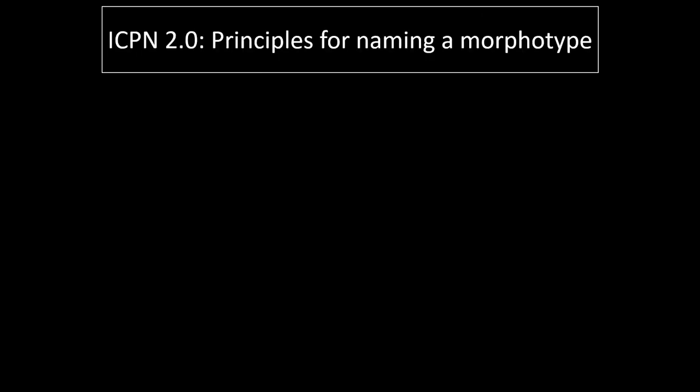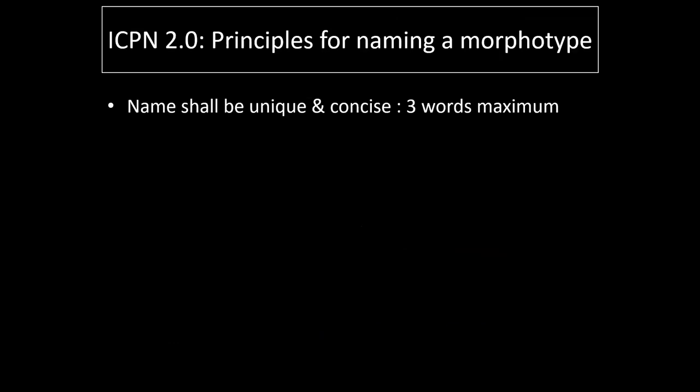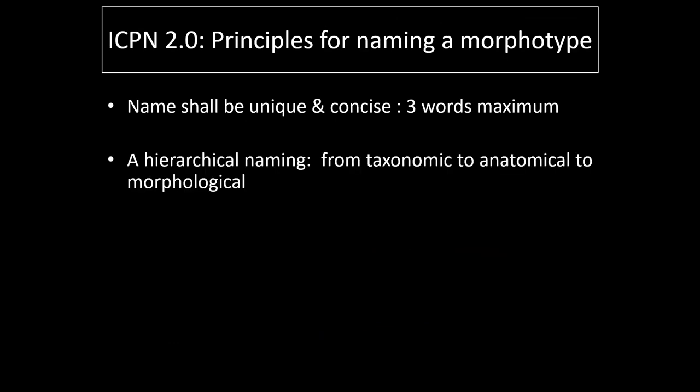Our purpose in this presentation is to highlight some aspects of ICPN 2.0 — the principles for naming and the principles for describing. Let us start with the principles for naming. Each name shall be unique and rather concise, made of three words maximum.